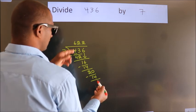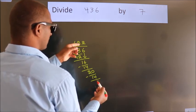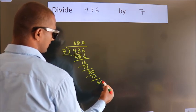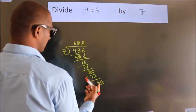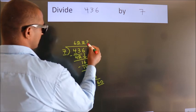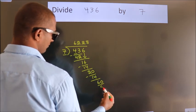After this, we already have the decimal. So, directly take 0. So, 60. A number close to 60 in 7 table is 7, 8, 56.